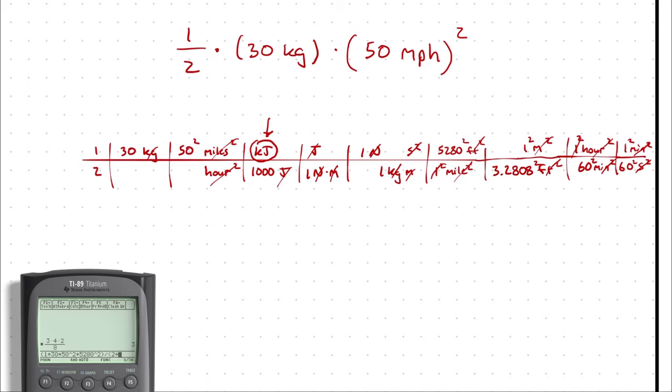Then I divide by 2 times 1,000 times 3.2808 squared times 60 squared times 60 squared. And I get 7.49.